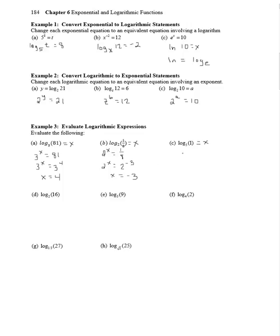Part c, we have 5 to the x equals 1. Uh-oh, how are we going to get a 1 to be a base 5? Well, this is where we have to use that thing we know that anything to the 0 power is 1. So that means 5 to the x equals 5 to the 0, so x equals 0.